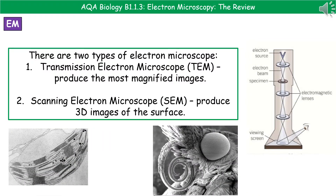When it comes to considering these electron microscopes, we actually have two types. The first one is the transmission electron microscope, or TEM, and these are the ones that are able to produce the most magnified images. The second one, the scanning electron microscope, or SEM, is actually incredibly clever, because what they're able to do is produce three-dimensional images of the surface. So on the right there, you can see the actual zoomed-in 3D surface of a bug.